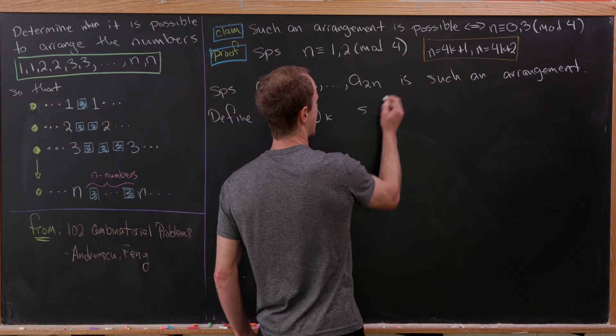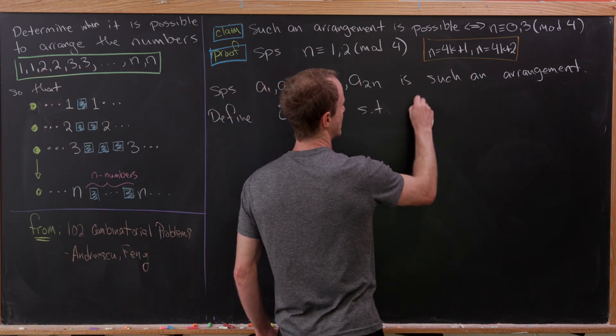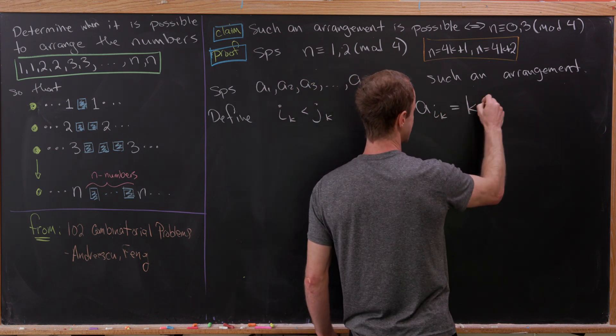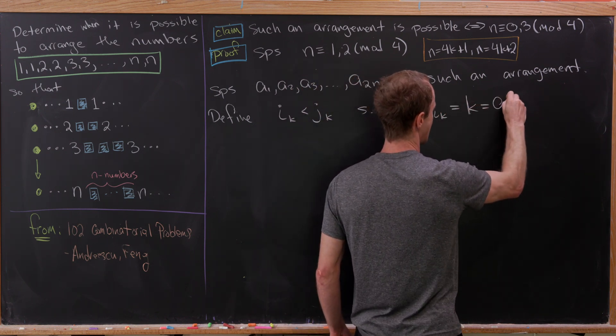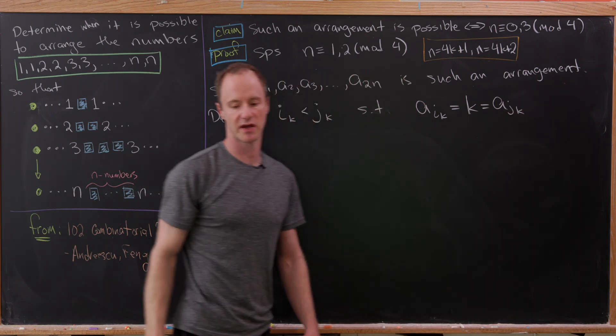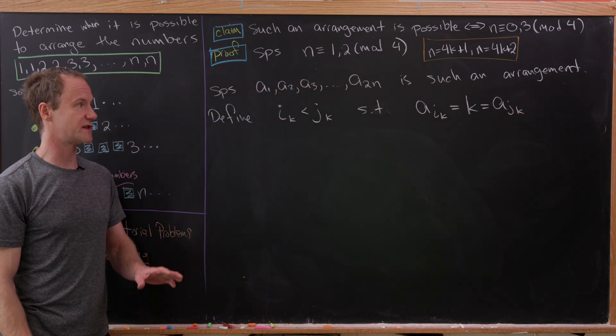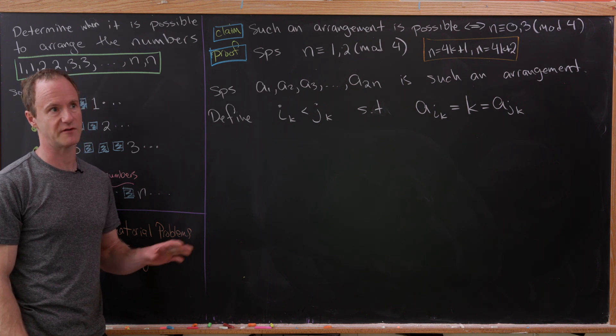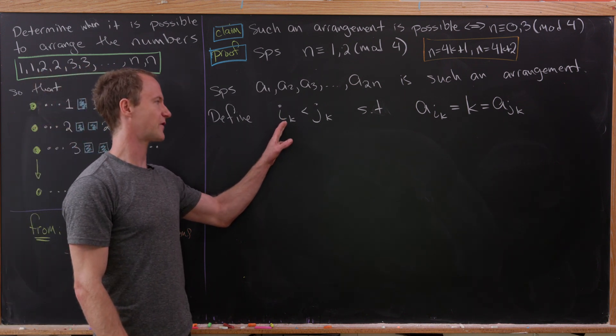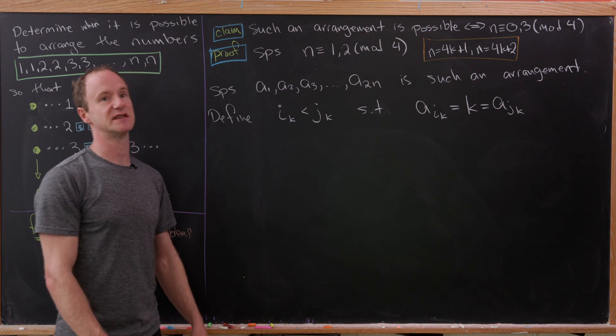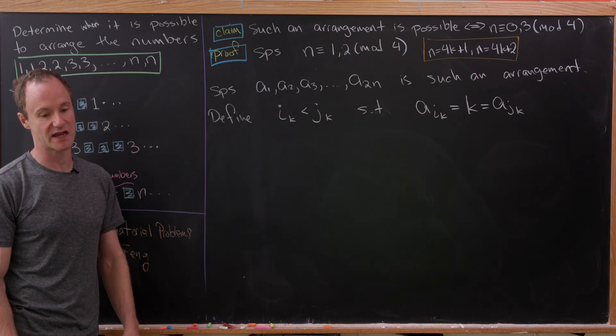They're defined such that we have A sub I sub K is the same thing as K, which is the same thing as A sub J sub K. In other words, they're the two appearances of K. This is the first appearance in the I_Kth position, and this is the second appearance in the J_Kth position.